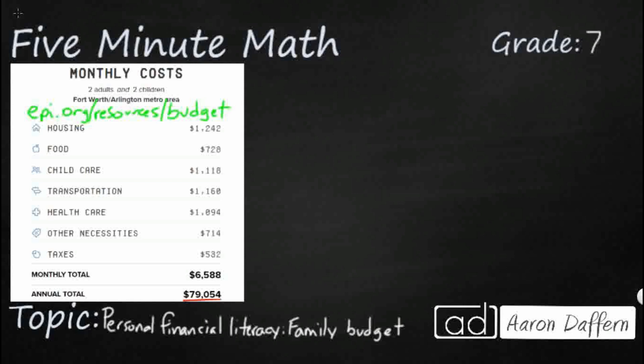What we have here on the screen is a screenshot from a family budget calculator. The URL is from the Economic Policy Institute. If you go to epi.org, on the menu at the top you'll see a button that says Resources — hover over that and the second option should be the family budget calculator, or you can go straight to epi.org/resources/budget.